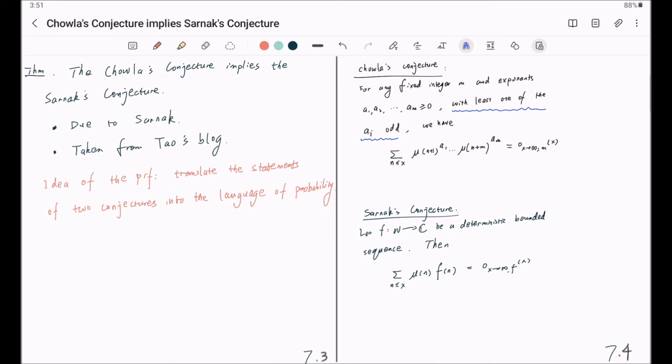Let's first look at Sarnak's conjecture. Look at this equation. Most people will just see this as an equation in calculus. It's like an estimate of a sum. But smart mathematicians will view this in another way. If you look at this sum, maybe we can make it into an average.